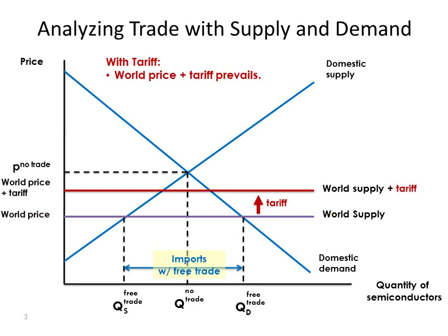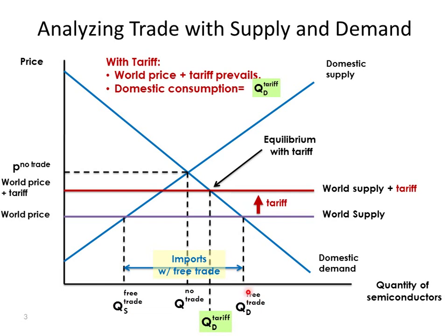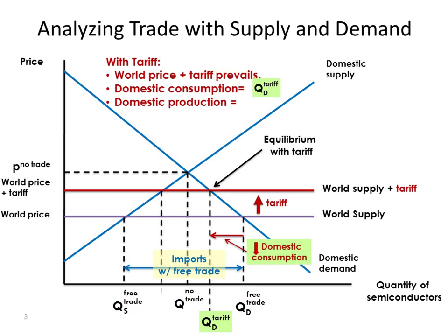The world supply curve shifts up to the new equilibrium. At a higher price, domestic consumers are going to demand a lower quantity, so domestic consumption falls from QD free trade to QD with the tariff. What about domestic production? With the higher price, domestic suppliers are now willing to supply more, so domestic production increases from QS free trade to QS with the tariff along the domestic supply curve.